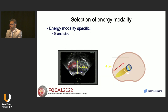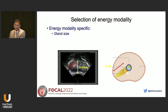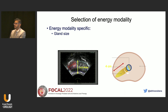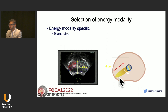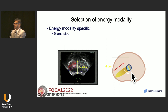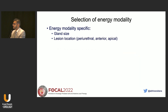For example, gland size matters. If you have access only to transrectal or transurethral HIFU, gland size can become a problem. A clinically significant cancer on the anterior aspect of the prostate may not achieve optimal HIFU ablation, and similarly, cancer on the posterolateral aspect may be out of reach for transurethral HIFU. In those cases, patients would be better served with radical treatment.